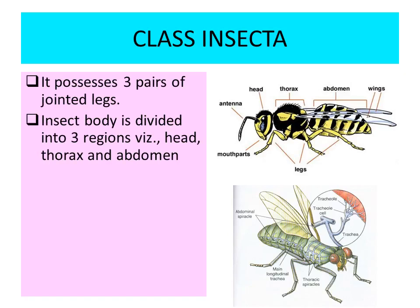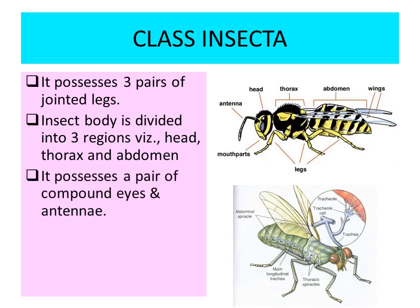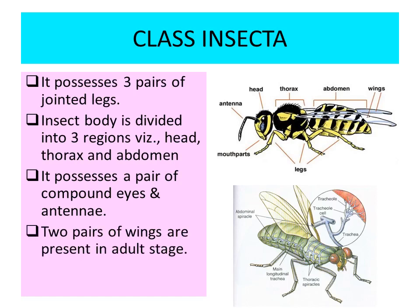Second, in the case of class Insecta, the body is divisible into three parts: head, thorax, and abdomen. The head bears the antenna, the mouth parts, and the eyes. The thorax bears three pairs of jointed legs and two pairs of wings. The third important point is that it has a pair of compound eyes and a pair of antennae. Two pairs of wings are present in the adult stage.